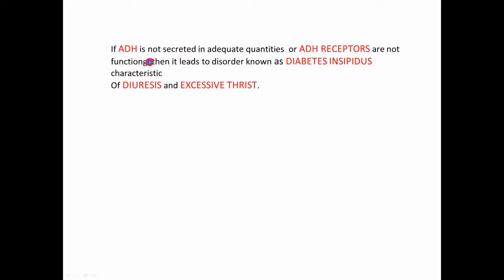If ADH is not secreted in adequate quantities, or if ADH receptors are not functioning, it leads to a disorder known as diabetes insipidus. This condition is characterized by excess loss of water through urine and excessive thirst to compensate for that loss. This is how the brain controls the kidney. In the next class, we will learn about the RAS system.